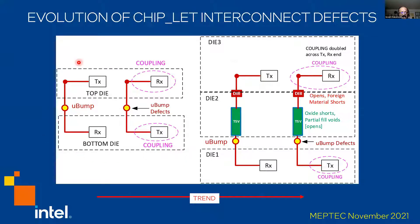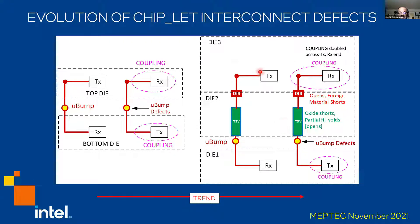We talked about the micro bump defect so far. On the right side, we have three dies being stacked, each with their own failure modes. We have the micro bumps, and the TSVs have their own failure modes — oxide shorts, partially void opens that could be created in the TSVs. Then the direct metal-to-metal connection has its own set of defects: opens, foreign material shorts, and so on. The interesting thing to remember is that we can do a full test at the end when everything is assembled, but if you need more information at intermediate stages of stacking, that is an interesting question to be answered as to how we do that.